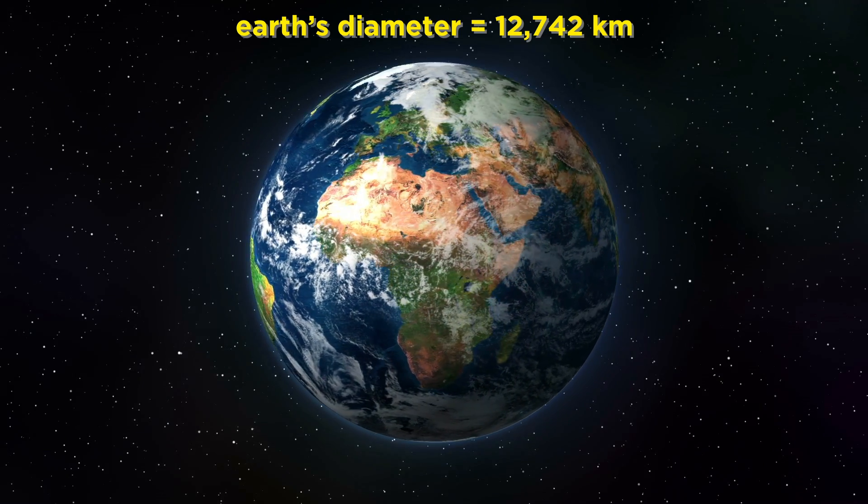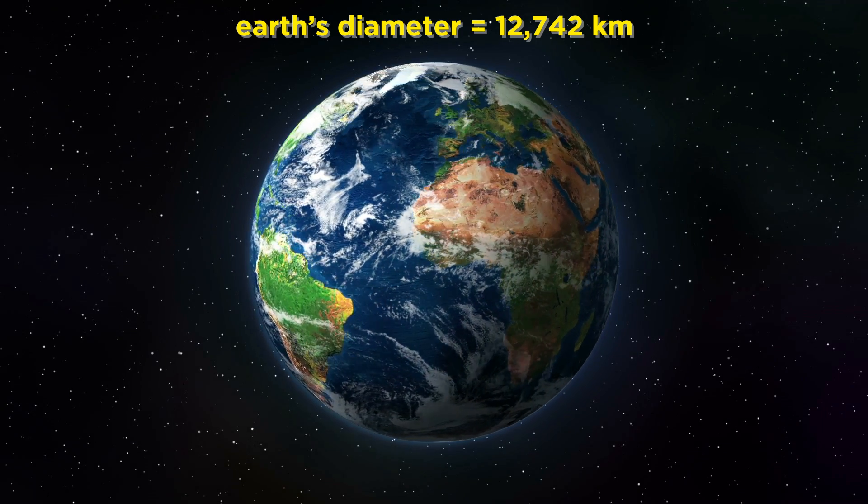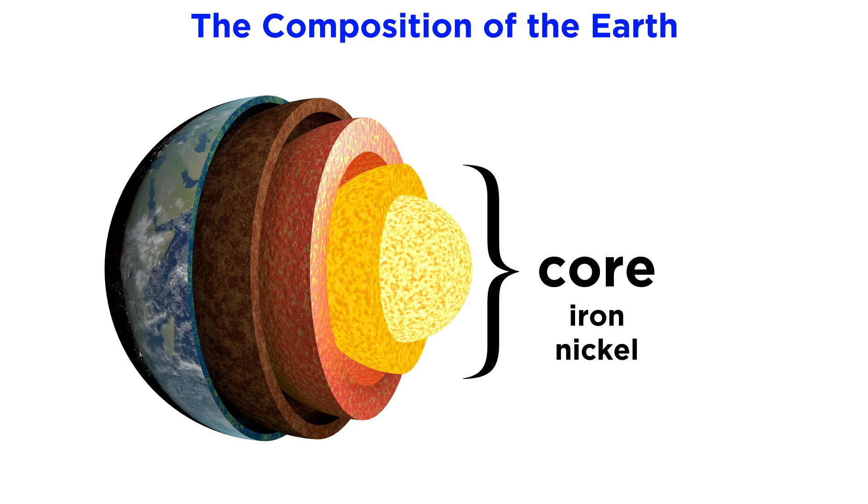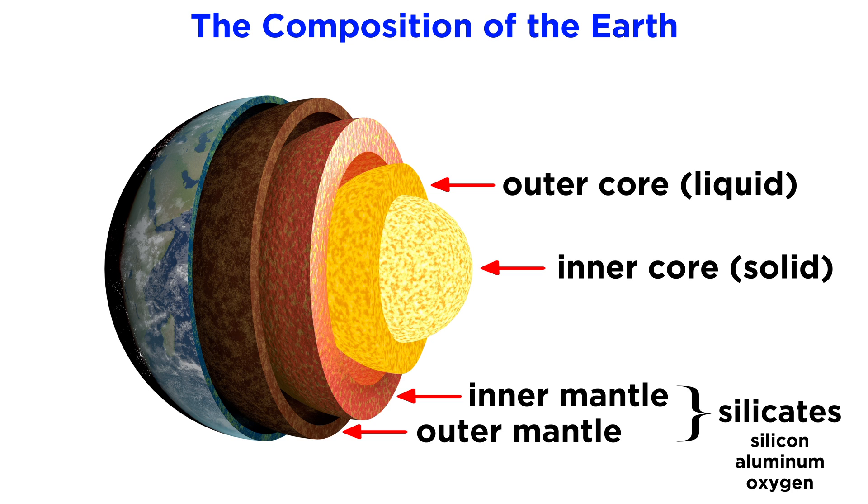We've already discussed how the size of the Earth was determined, which is around thirteen thousand kilometers in diameter. The composition of the Earth is obviously much better understood than any other object in the solar system, since we are living on it and have perpetual direct access to it. The core of the Earth is made mainly of iron, with some nickel, and is divided into a solid inner core and a liquid outer core. This core is surrounded by a rocky mantle, comprised largely of different combinations of silicon, aluminum, and oxygen, which we call silicates, although there are lots of other metals and minerals as well.